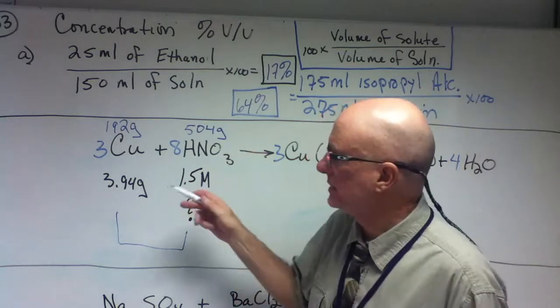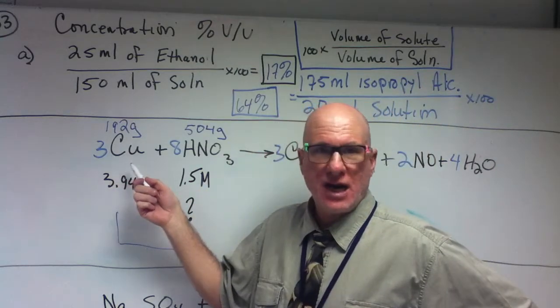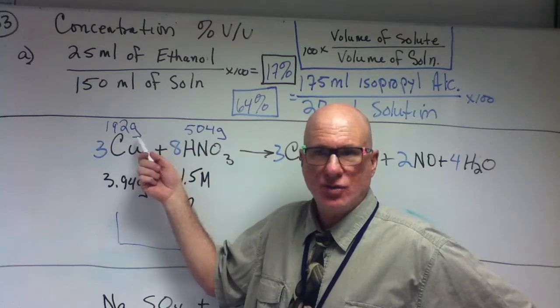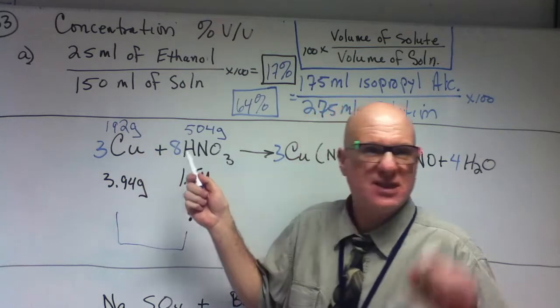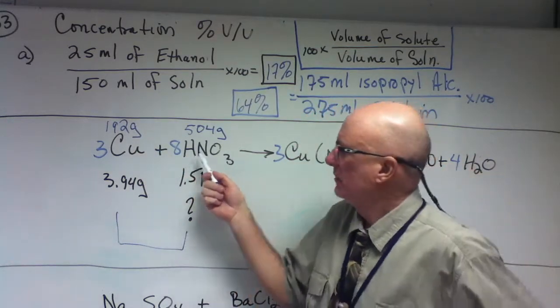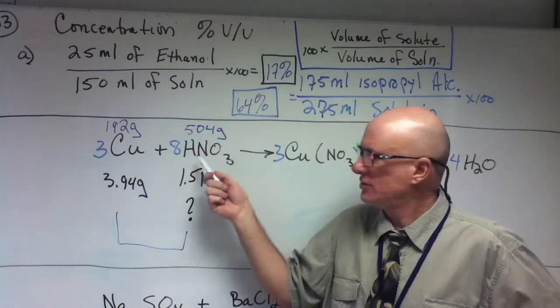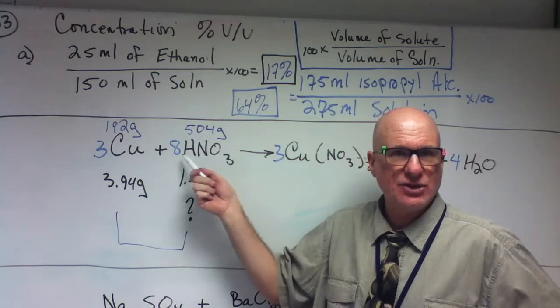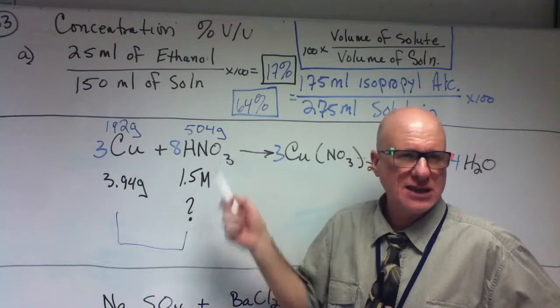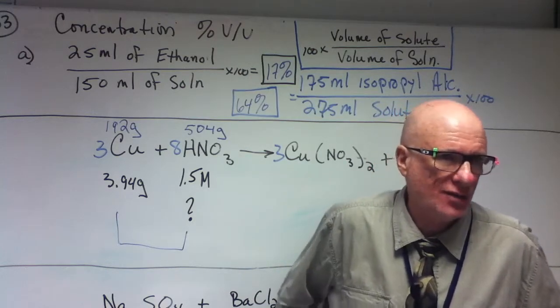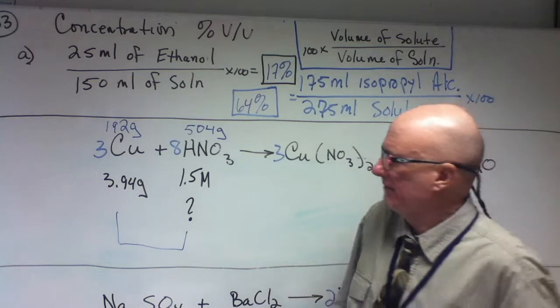That means that if I take 3 moles of copper, 192 grams, that's going to specifically react with 504 grams of nitric acid, which is 8 moles. So that's kind of a review of chapter 12.